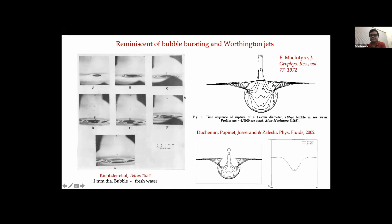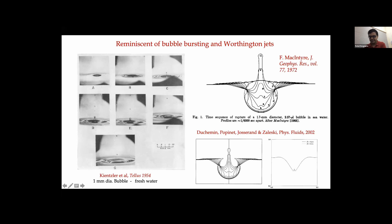Let me go over to an analogous problem. I have taken two classical studies of bubble bursting. Very analogous phenomena are also seen in bubble bursting and in Worthington jets. These two studies are from 1954 and 1972. In the experiment, a bubble collapses: initially there is a bubble, it bursts, and you can see capillary waves focusing, then a small bump-like structure forming that gives rise to a jet, which under certain conditions can eject droplets from its tip.